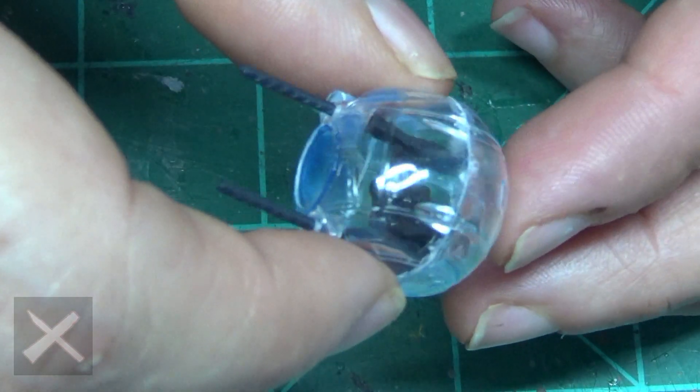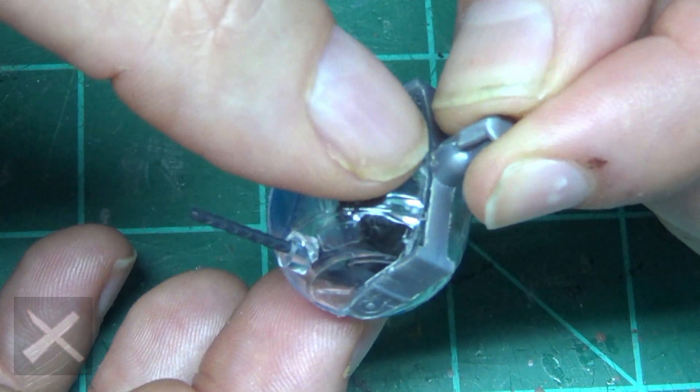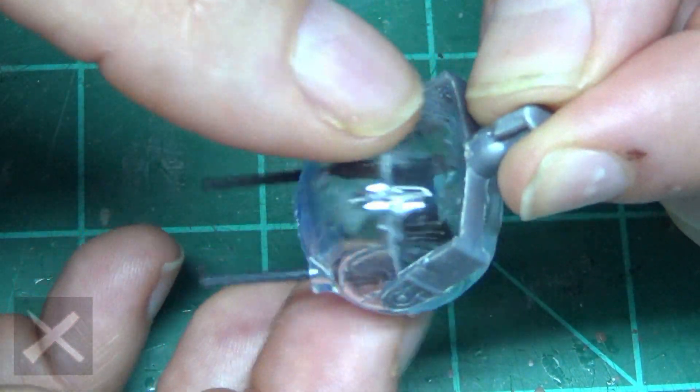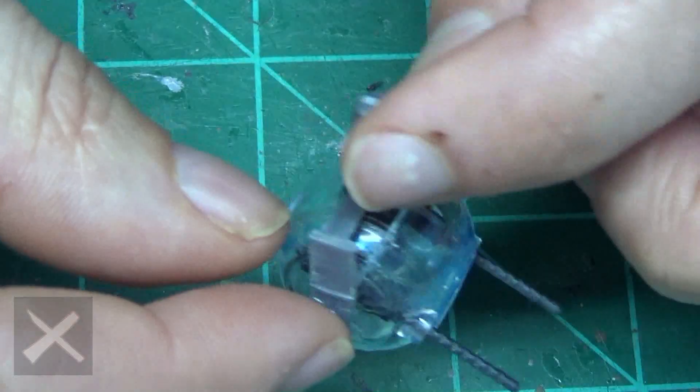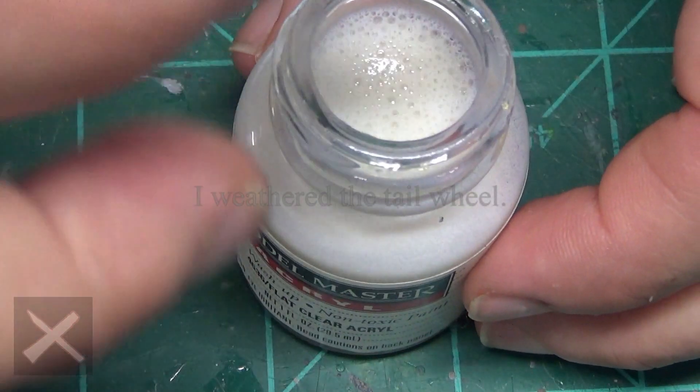So this is the ball turret. Once it's dry, stick it in its little holder just like that. It pops in there. Make sure it rotates. It does. Perfect. Then you paint it and then it might not rotate. Pops out real easy.